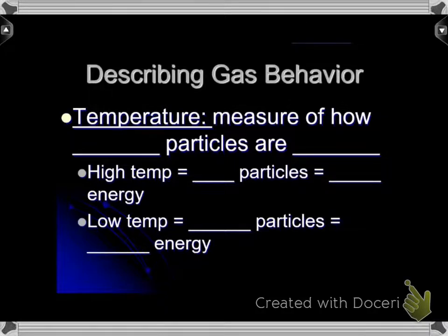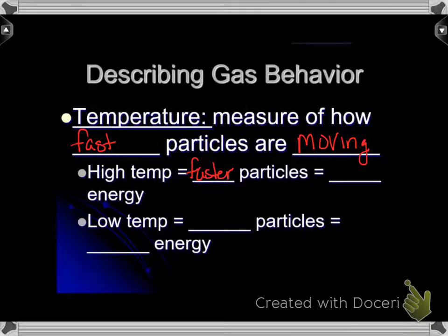Describing gas behavior - and no, I'm not talking about the kind of gases you guys pass in class. I'm talking about noble gases, gases that are on the periodic table. First, we have temperature and how temperature affects gas behavior. Temperature is a measure of how fast particles are moving. A high temperature means faster particles, which means there's more energy.